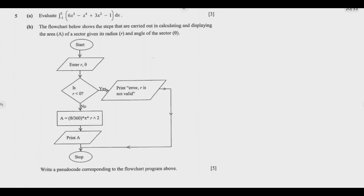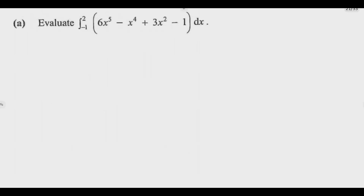Question 5a: evaluate 6x to the power 5 minus x to the power 4 plus 3x squared minus 1, with respect to x over the interval negative 1 to 2. Let us start with Question A and come to Question B later. For Question A, we need to know the rules of integration.